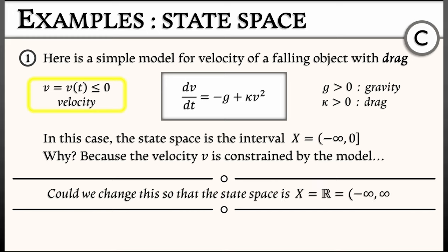Now, couldn't we change it so that the state space was the entire real line, both negative and positive numbers? Well, yes, we could do that, but this model might no longer be valid.